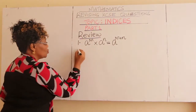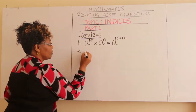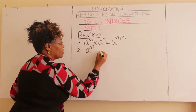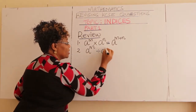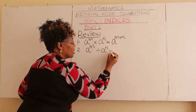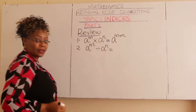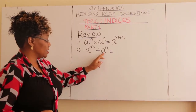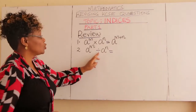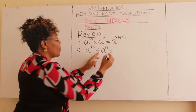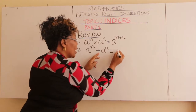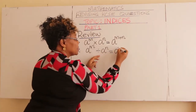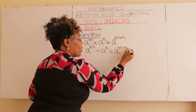Number two: if you have A raised to M divided by A raised to N — common bases, you are dividing — what do you do with the powers? You write the base and then you subtract the powers.